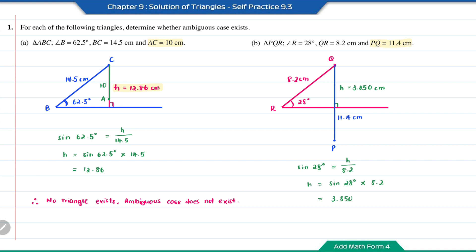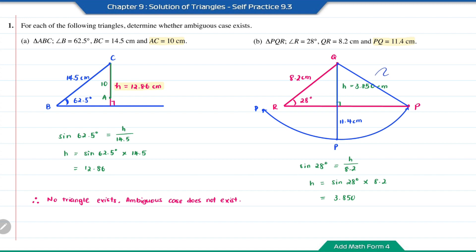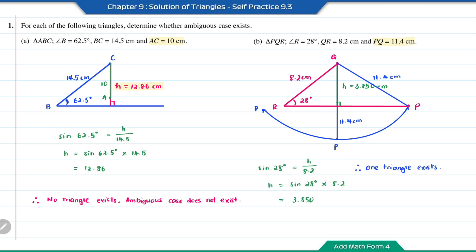If we swing the point P just like a pendulum, the point P will land beyond the point R. But when you swing the point P to the right-hand side and extend the horizontal line, the point P will be touching the horizontal line at one point. The length of PQ equals 11.4 cm. So in this case, you can only form one triangle. Therefore, ambiguous case does not exist for question B.